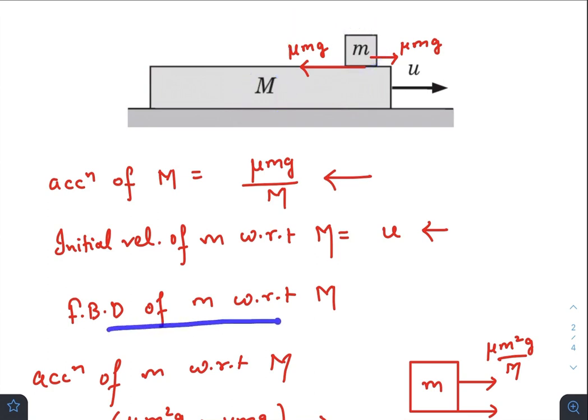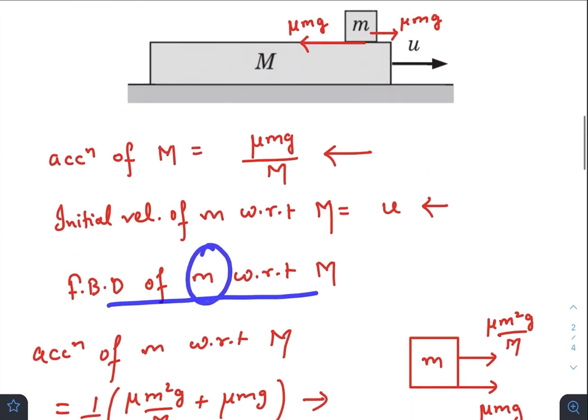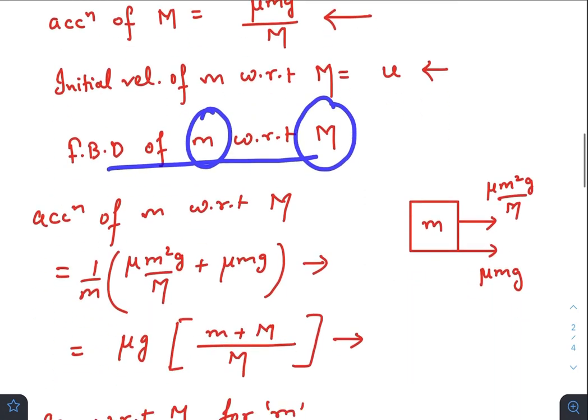So free body diagram if you draw of small m mass with respect to capital M, so there will be the frictional force μmg towards right and an additional pseudo force, because capital M is a non-inertial frame.